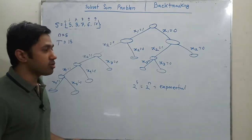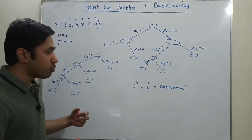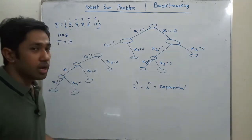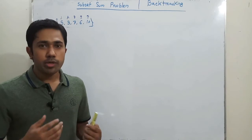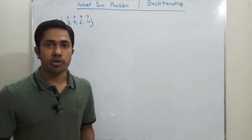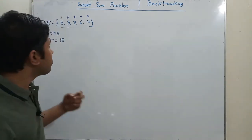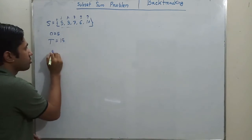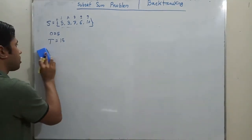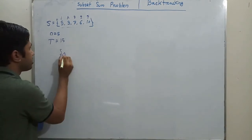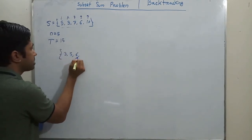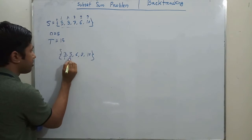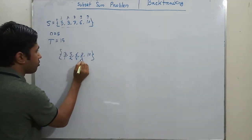To make it efficient, we need to use backtracking by applying constraints — that is our bounding function — to solve this problem in an efficient way. To apply backtracking, we first need to sort the array. After sorting: 3, 5, 6, 7, and 10. So 3 is the first element, 5 is the second, then the 3rd, 4th, and 5th.